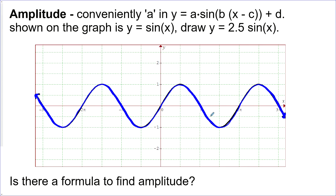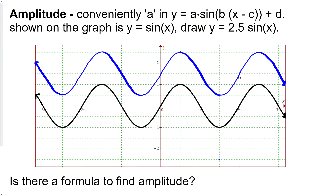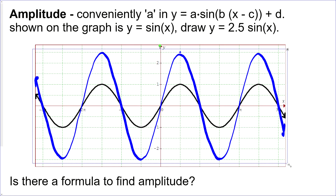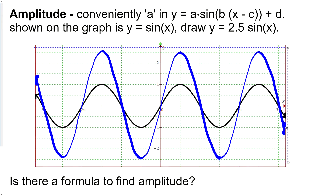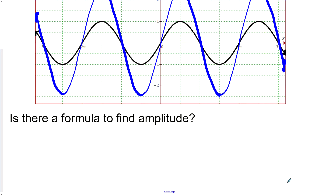Amplitude is easy to remember because it's the a value in our function. The graph shows y = sin x and we want to draw y = 2.5 sin x, meaning every point is vertically stretched around the x-axis by a factor of 2.5. The point at y = 1 will now be at 2.5, and the point at y = −1 will be at −2.5. The graph has the same period and midline — it just got stretched vertically. The formula for amplitude is: amplitude = (max − min) / 2.